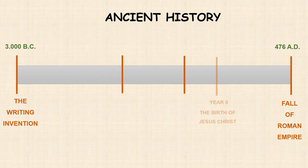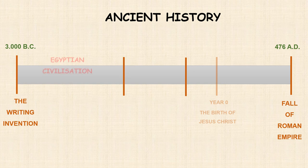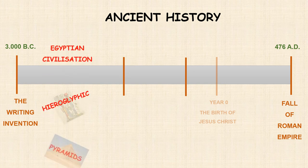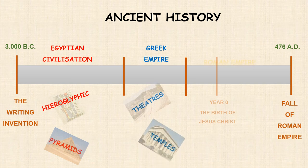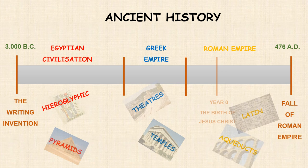Ancient history can be divided into three main civilizations: the Egyptian civilization, who invented hieroglyphics and built pyramids; the Greek Empire, who built theatres and temples; and the Roman Empire, who invented the Latin language and built many civil constructions like aqueducts and bridges.